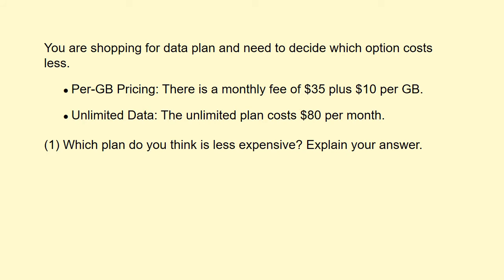In problem number one in the book, they want you to think about a phone plan. One plan has a flat thirty-five dollars plus ten dollars additional per gigabyte. The unlimited plan is eighty dollars a month regardless of how much you use. They're asking: what plan do you think is less expensive? That question may not be simple — there may be conditions and what-ifs — so think about it and give an answer without doing any math.